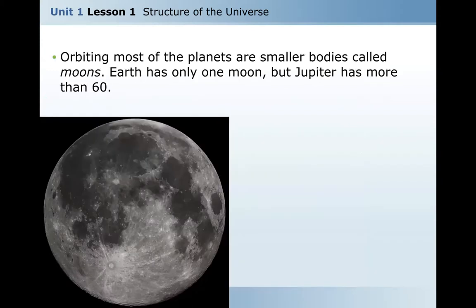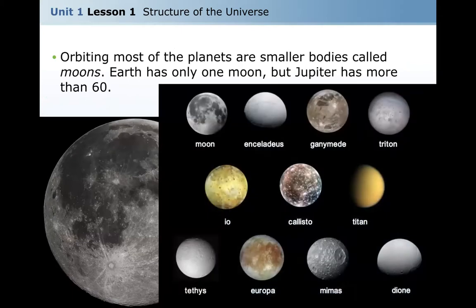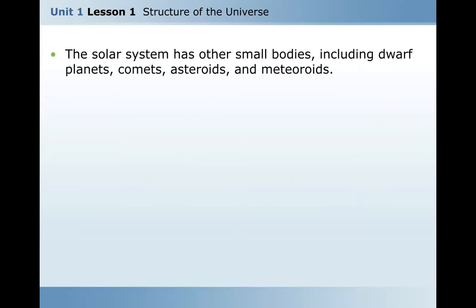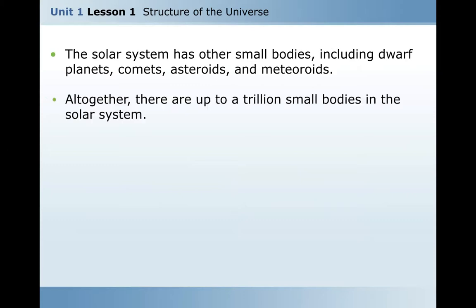Orbiting most of the planets are small bodies called moons. Earth has only one moon, but Jupiter has more than 60. The solar system also has other small bodies, including dwarf planets, comets, asteroids, and meteoroids. Altogether, there are up to a trillion small bodies in just our solar system.